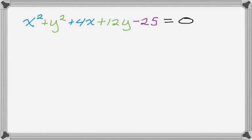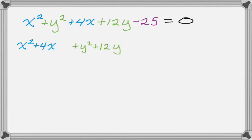The first thing you want to do is rearrange it so all the x terms go together: x squared plus 4x, then leave a space. Then group the y things together, leave another space, and move the constant to the other side, so equals 25.